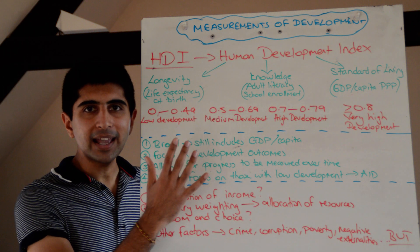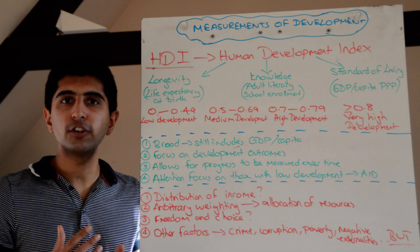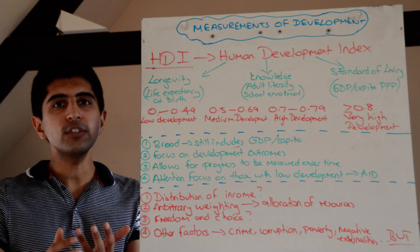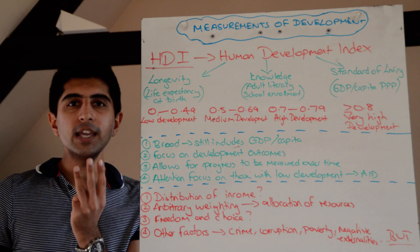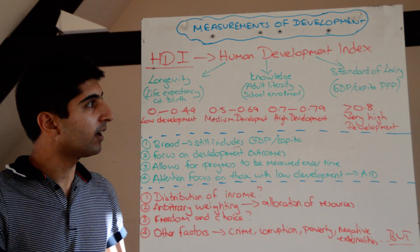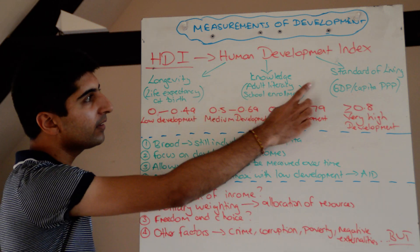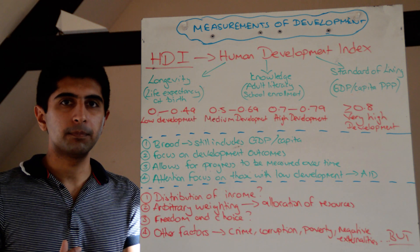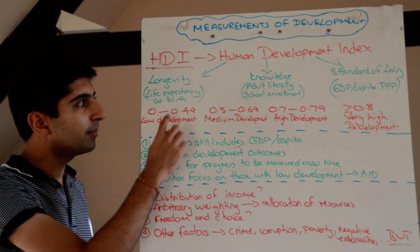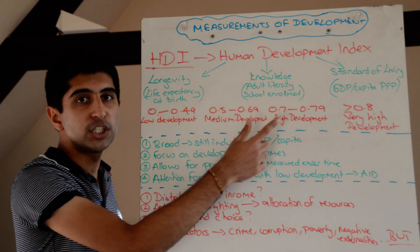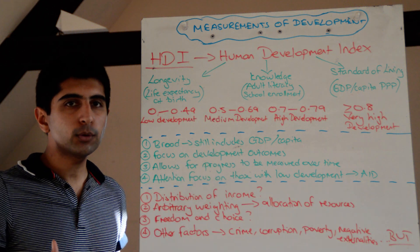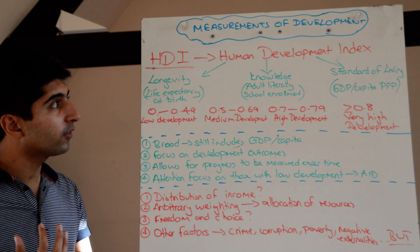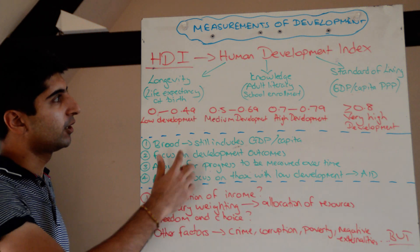It is an index, calculated just like an index normally is. But it constitutes three key things — highlighted here in green — which are weighted equally. Equal weighting is given to each of the three components in this index.